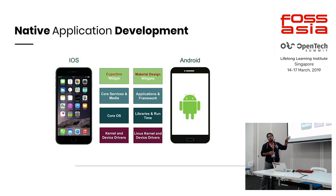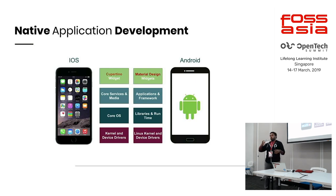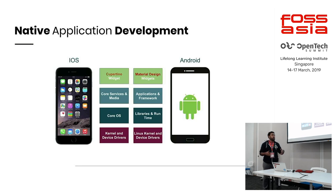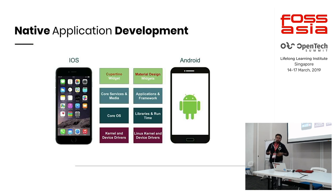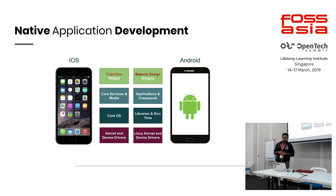Whether you are an Android or iOS developer, you have to go through these layers — that's the very high-level layers in your application. At the top part we have widgets which render your UI, whatever the thing that users interact with. On the iOS side we have the Cupertino widgets; on the Android side we have material widgets, which came up with material principles to make users happy with the UI. The second layer has core services, and on the Android side we have the application and frameworks. The third layer has the core OS on the iOS side, and on Android we have libraries and the runtime. The bottom layer has kernel drivers in iOS, and in Android we have the Linux kernel and device drivers.